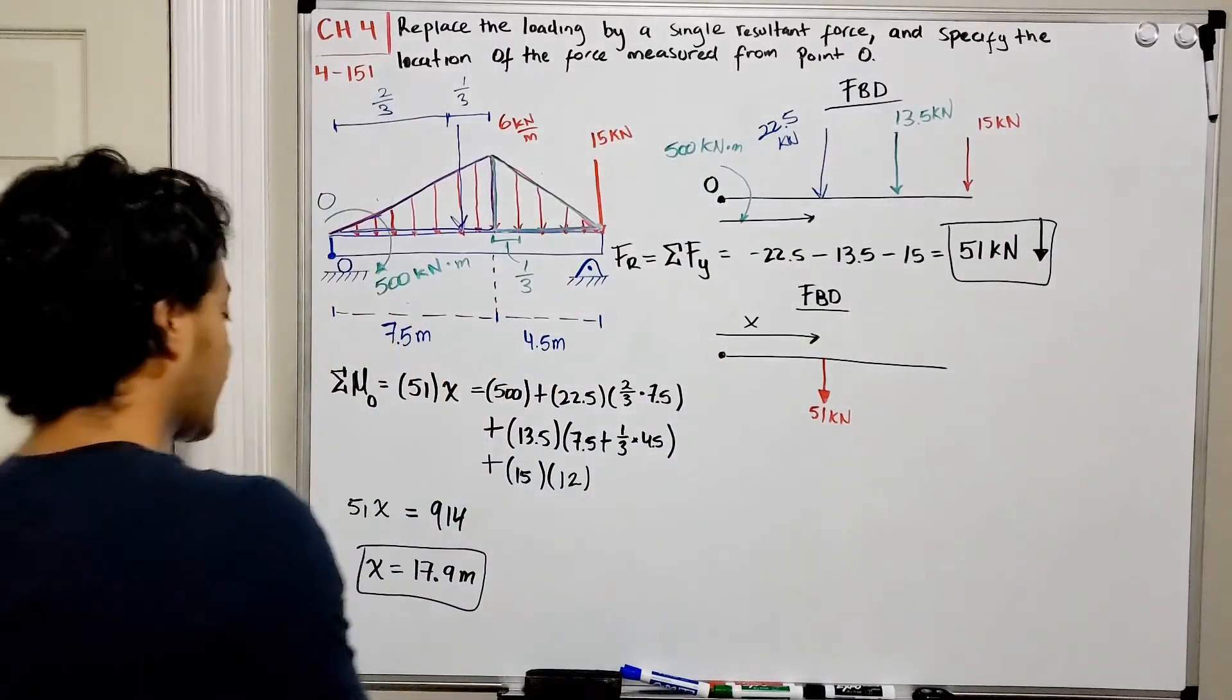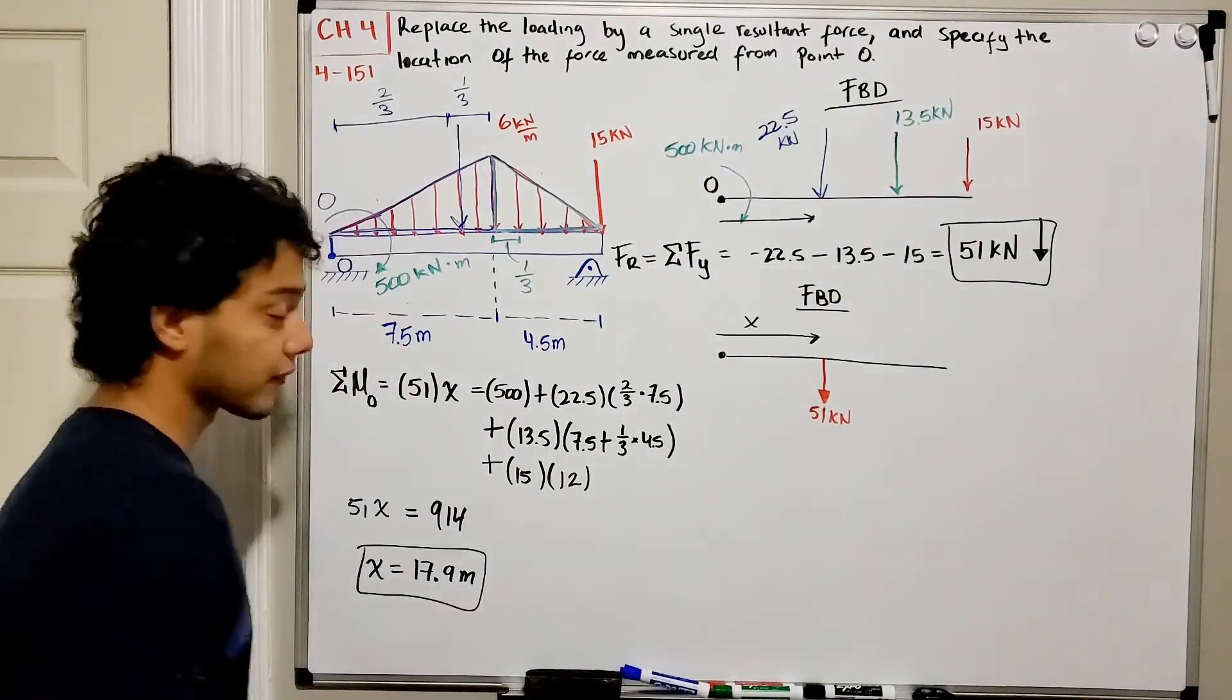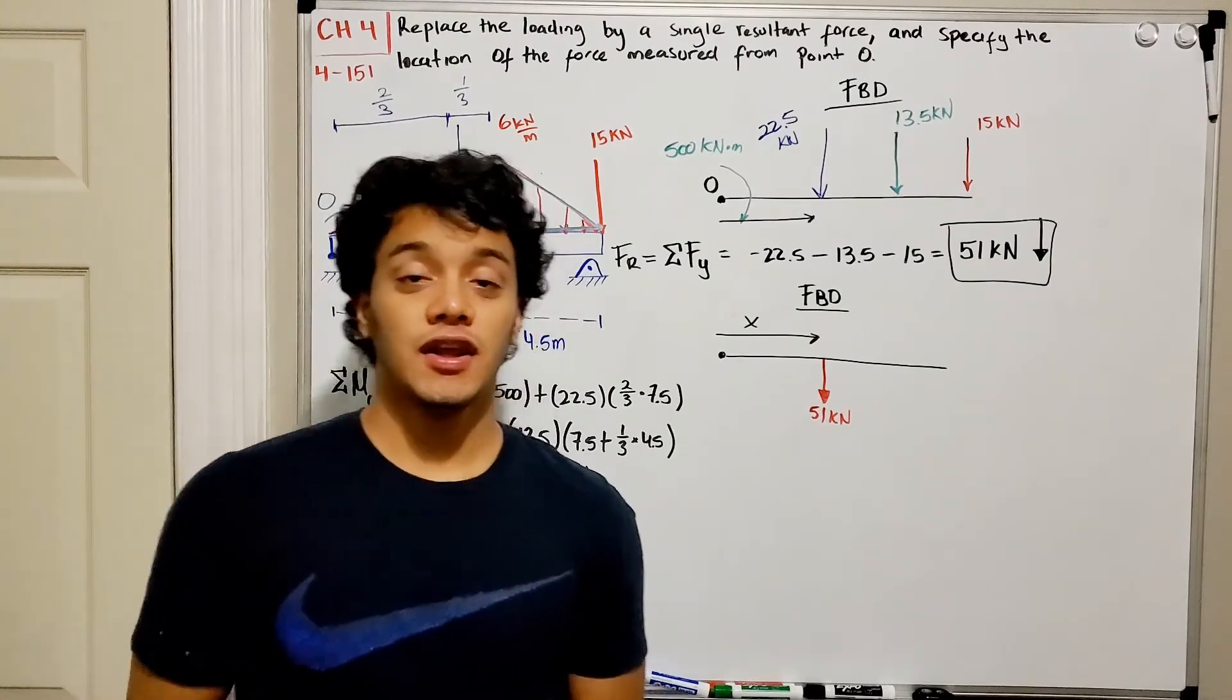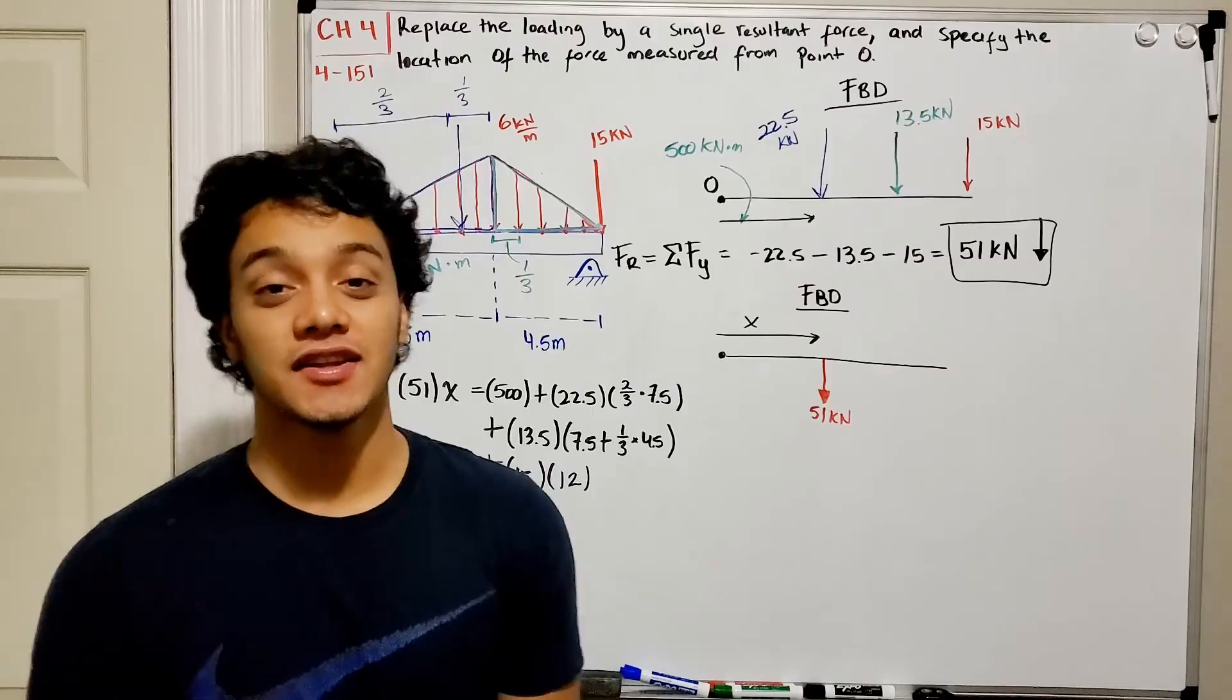So we found our resultant force which is this one and its direction, so going down, and we also found its position with respect to our beam. Thank you guys for watching. If you have any questions or comments just post down below and I'll see you guys in the next video.